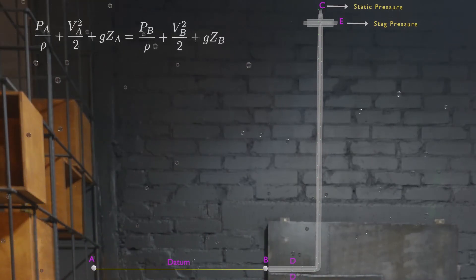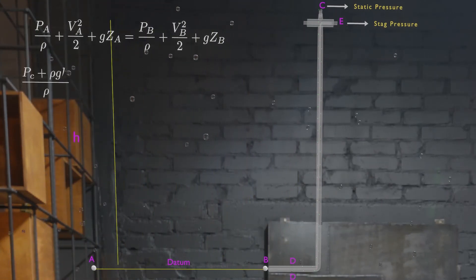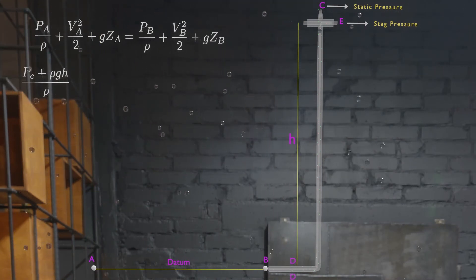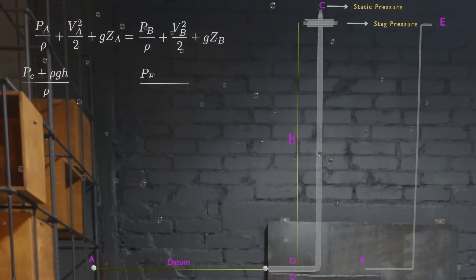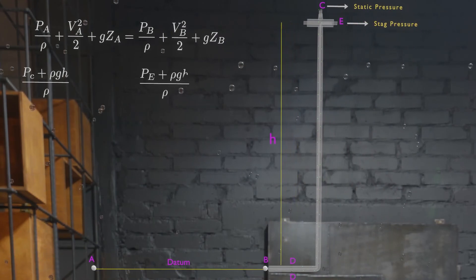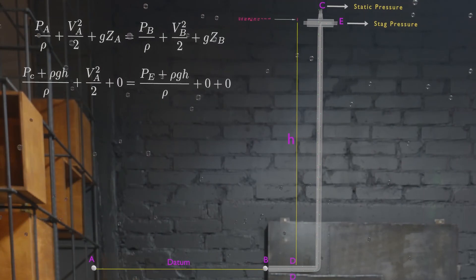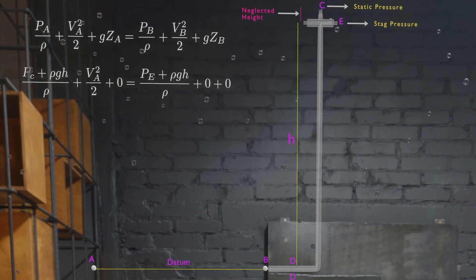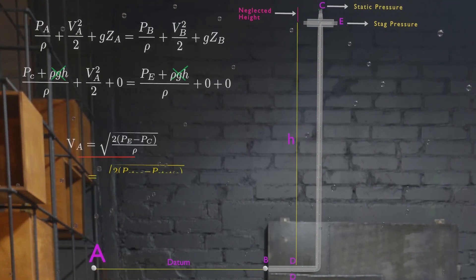Pressure at point A is pressure at point C plus the hydrostatic pressure due to height H. Similarly, pressure at point B is pressure at point E plus the hydrostatic pressure created due to the same height H. We are neglecting any elevation differences between C and E compared to height H. Now solving the Bernoulli equation, the velocity at point A is found.